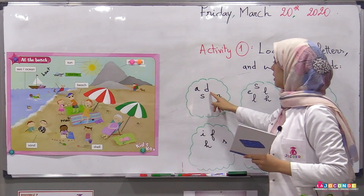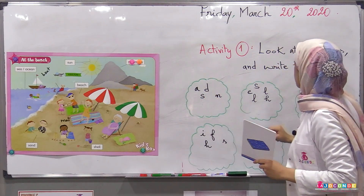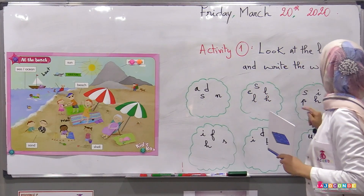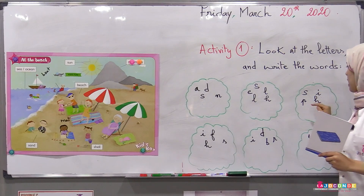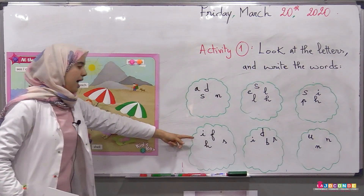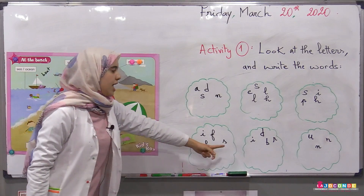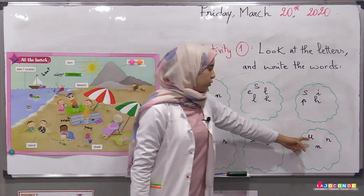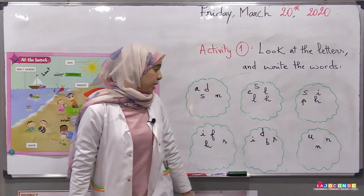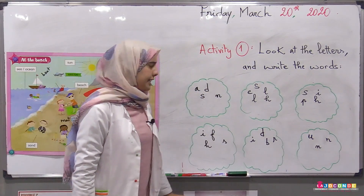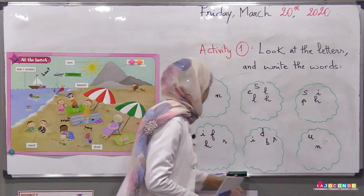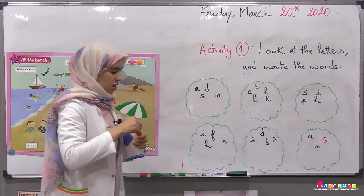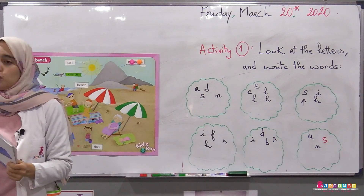Let's look at the letters. Here we have: D-S-N; here we have S-E-double L-H; here we have S-I-P-H; and here we have I-F-H-S, D-I-B-R-U-N, and S. Now I'll give you some minutes to do the exercise.